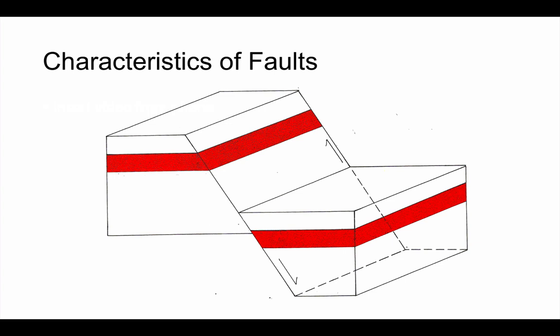Now a fault has several different components, several different parts that we as geologists of course have names for. Let's go through what these components are because it's essential to do that before we start looking at the different types. The first term we need to think about is a fault plane. This is the surface along which there has been movement, the break in the rock where there's been displacement of beds, like you can see with this red marker horizon that's been displaced on this fault.